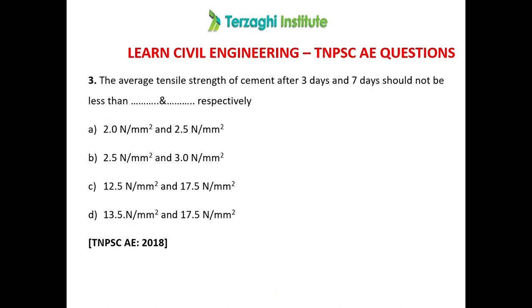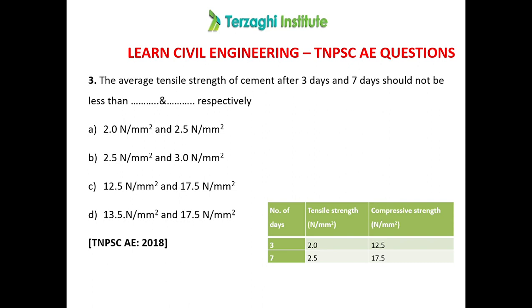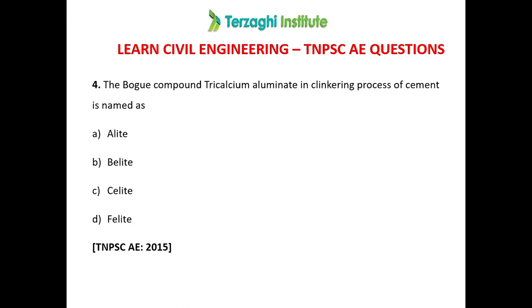Third question: The average tensile strength of cement after 3 days and 7 days should not be less than how much, respectively? All cement materials have both compressive and tensile strength. The compressive strength is 12.5 and 17.5 N/mm². The tensile strength answer is option A: 2 N/mm² at 3 days and 2.5 N/mm² at 7 days.